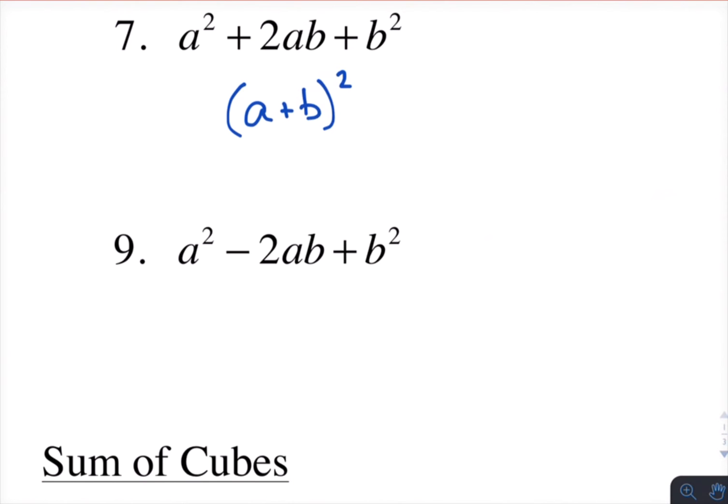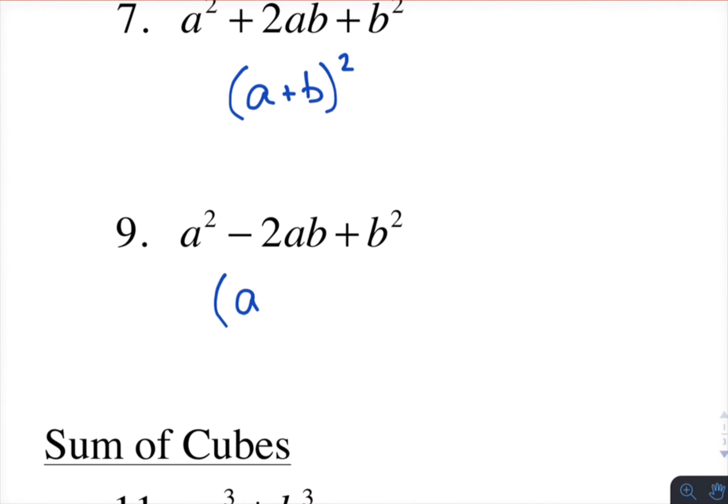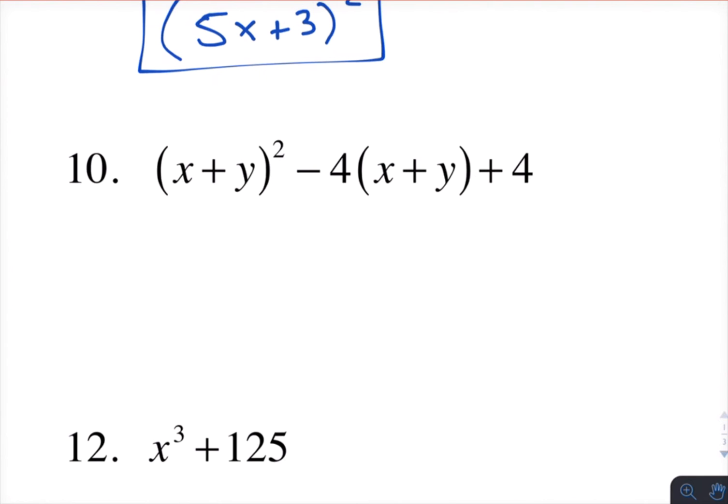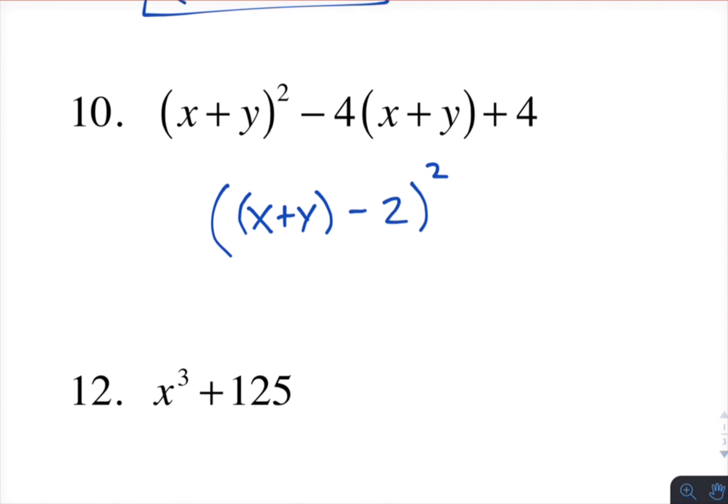You could also have the middle term be negative and still have a perfect square trinomial. This one would be a minus b squared. And technically, we should be saying the quantity of a minus b squared. Over here, another perfect square trinomial. It just looks a little funky, but it is x plus y minus 2 squared. And we can get rid of those parentheses and just write it like that.